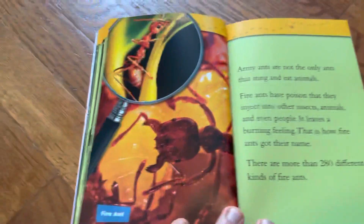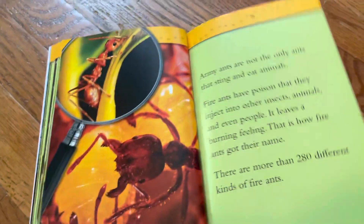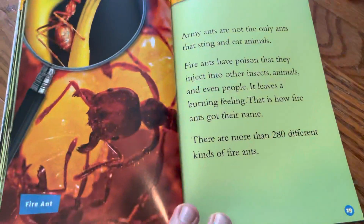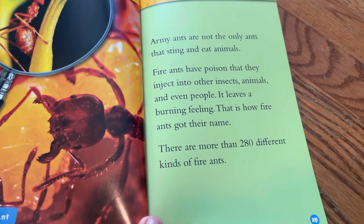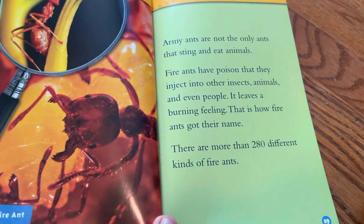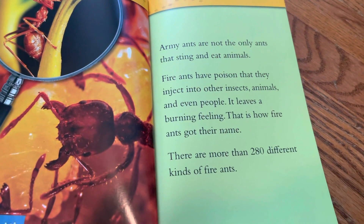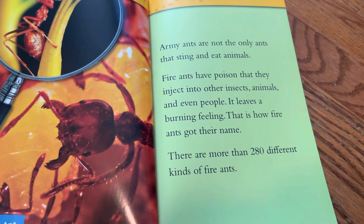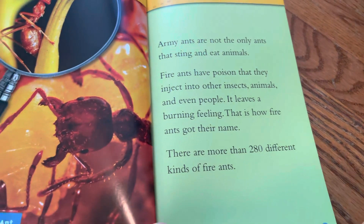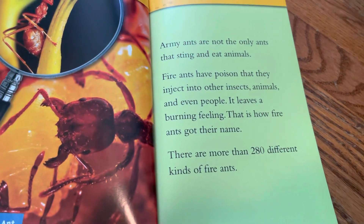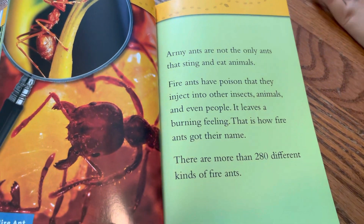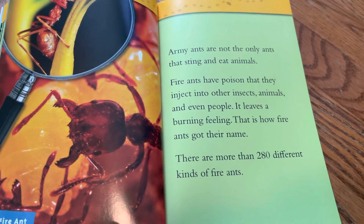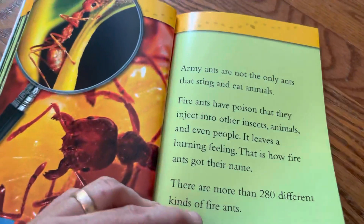Look at that fire ant — that's what you were talking about earlier. Look how he's all red. Army ants are not the only ants that sting and eat animals. Fire ants have a poison that they inject into other insects, animals, and even people. It leaves a burning feeling — that's how fire ants got their name. There are more than 280 different types of fire ants. That's incredible.